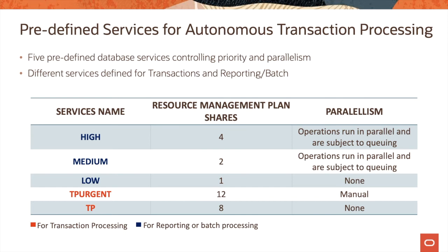The TP Urgent and TP services are for transaction processing, while high, medium, and low can be used for reporting or batch processing. When using high and medium, operations run in parallel and are subject to queuing. There is no parallelism when using the low or TP service.